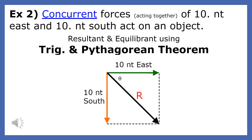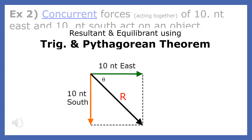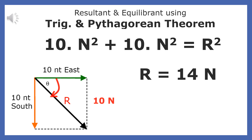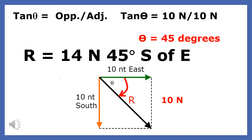Let's look at another example. Concurrent forces — forces acting together — of 10 newtons east and 10 newtons south act on an object. Let's use trig and the Pythagorean theorem to solve this problem. Since we have a right triangle, we can use the Pythagorean theorem to find the magnitude of the resultant. This comes from a² + b² = c², which is 10 newtons squared plus 10 newtons squared equals r squared. So 100 plus 100 is 200, and the square root of 200 is 14 newtons. The angle the resultant makes with the easterly direction can be found using the tangent function. The inverse tangent of 10 divided by 10 is 45 degrees. The resultant is 14 newtons, 45 degrees south of east.